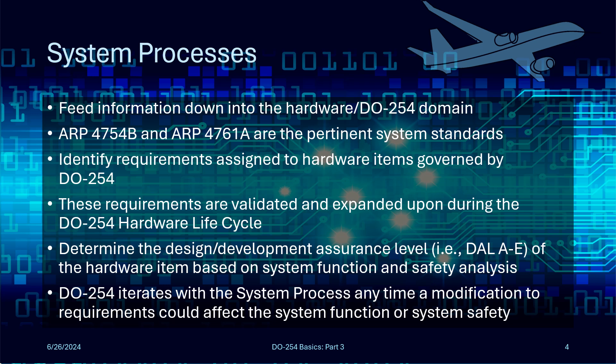I'll talk more specifically about those documents in Part 4, but for now you need to understand that what the system processes hand down to DO254 are two things: the requirements assigned to the hardware, and the design assurance level — or DAL — which applies to the hardware items' safety impact. The hardware plays a role in the system it serves, defined by a set of requirements handed down from the system to the DO254 process, where they're validated and designed into hardware. The hardware item also has an assigned DAL, called an item DAL, based on the system function and safety analysis at that higher level. The higher the DAL, the more work DO254 will entail.